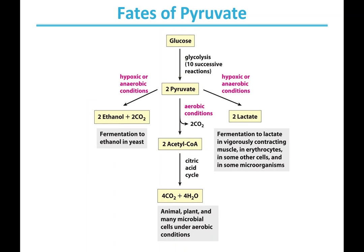Let's remind ourselves of the fates of pyruvate. In glycolysis, glucose goes to pyruvate through ten reactions. From there, pyruvate has different fates depending on whether oxygen is available. If plenty of oxygen is available and there's an energy need, pyruvate is broken down further into acetyl-CoA, fed into the citric acid cycle to make CO2 and water, generating electrons for the respiratory chain — that's under aerobic conditions.